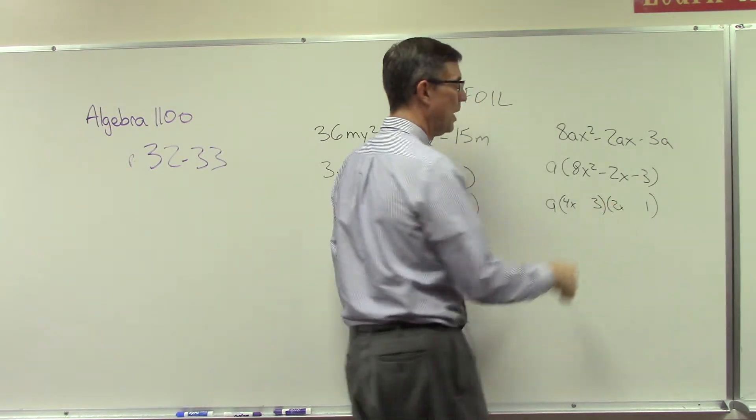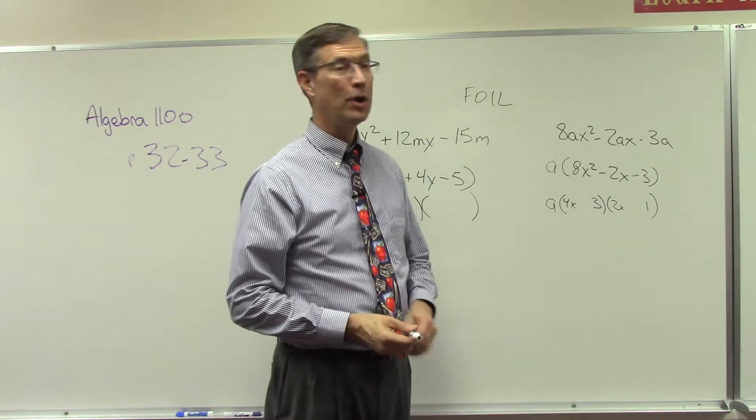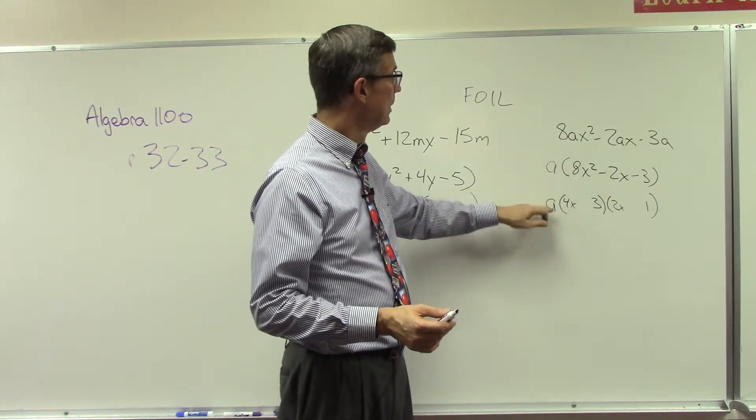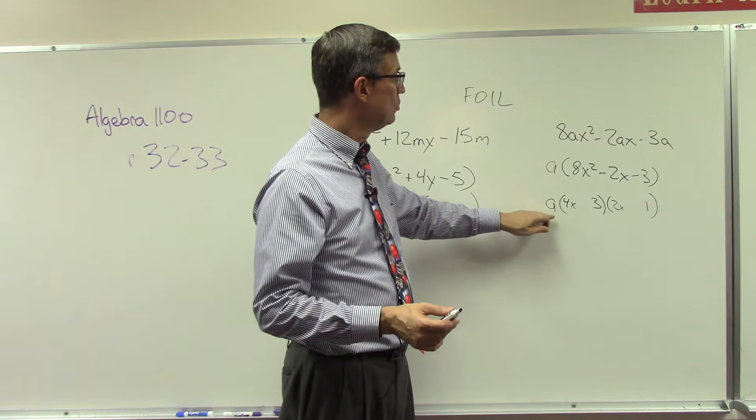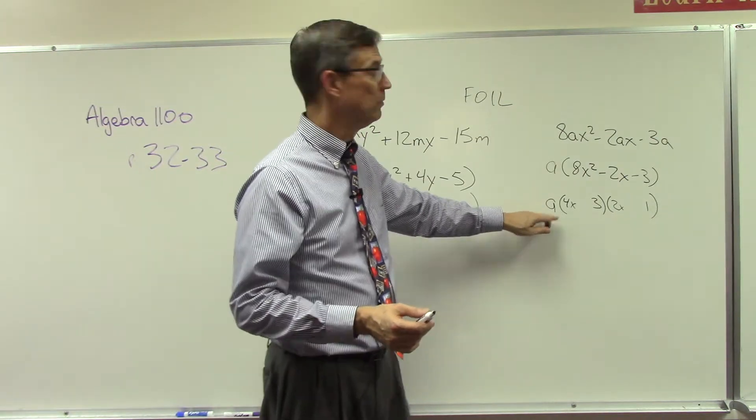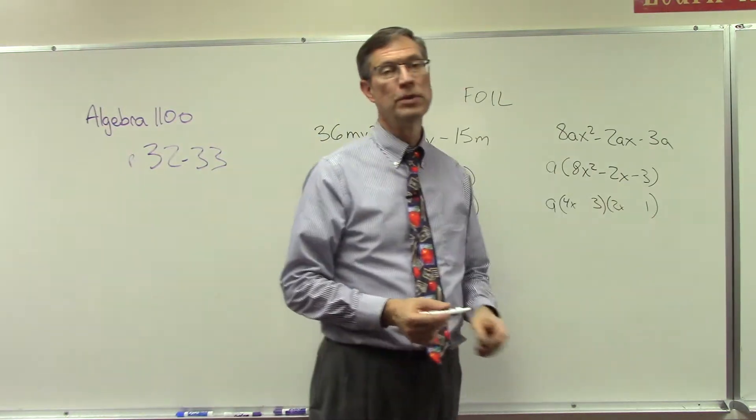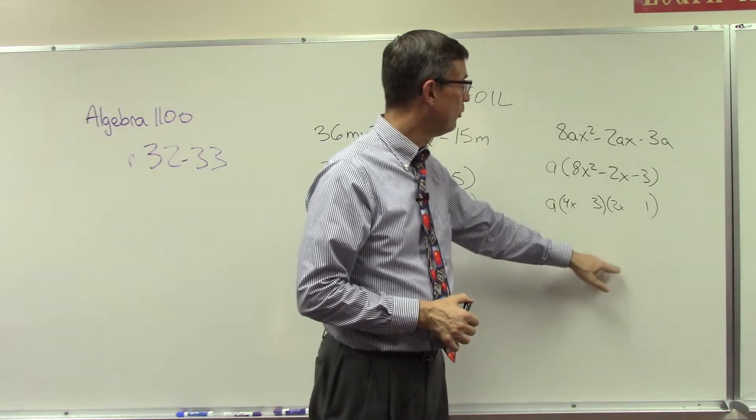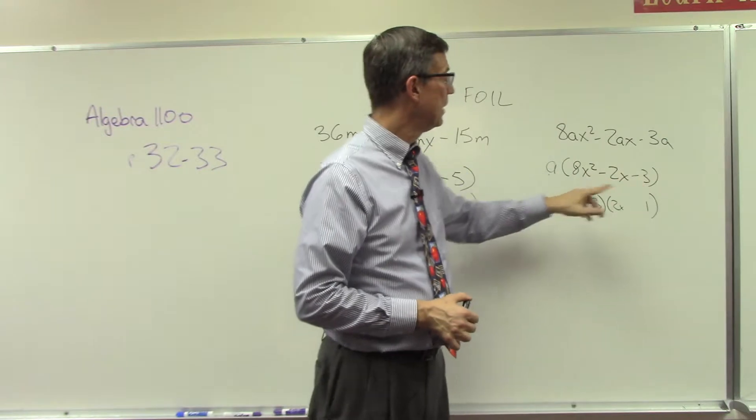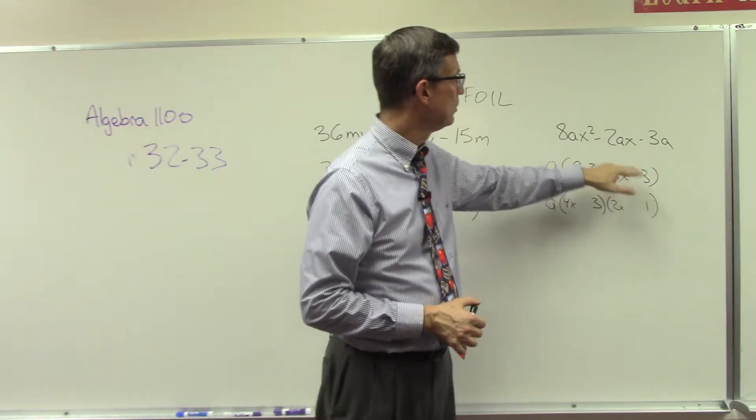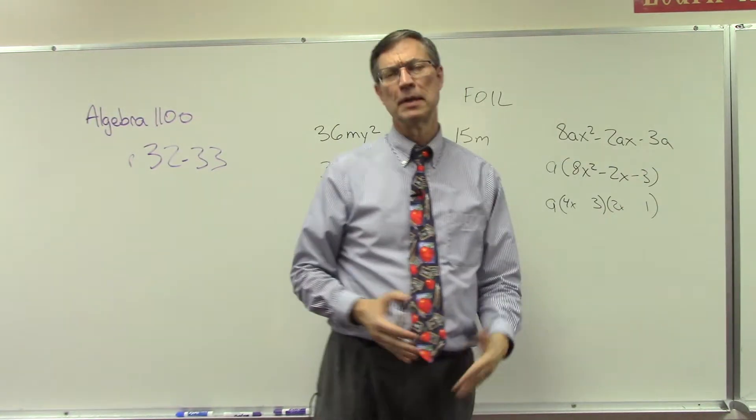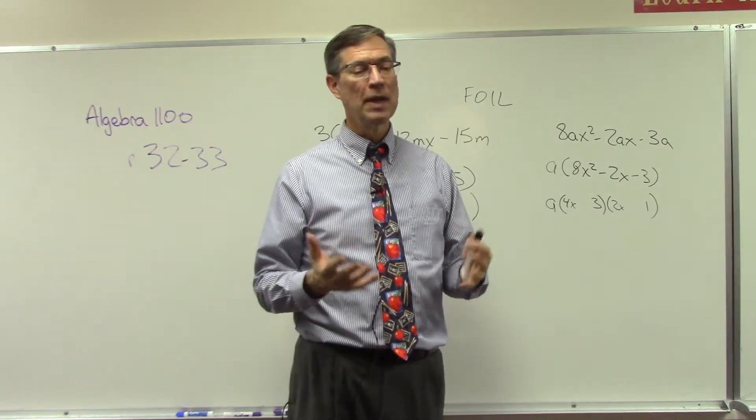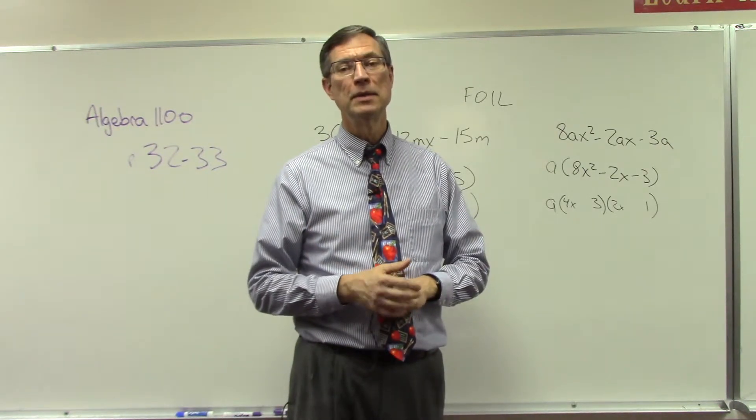So the first step is factor out the common term. In your final answer, you do leave that as part of the answer, and then you'll have these two parentheses, the two binomials. Check your work by doing the FOIL method to get this step back, and then you could distribute the 'a' times all three of them, and you should get the original problem back again. This is a little more complex, but they only have eight to ten problems like this for your homework.